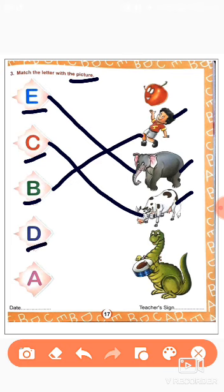Next one. D. D for? D for dinosaur. And D for drum. Anything. D for dinosaur. D for drum. So we will match this D to here. Okay. Next one.